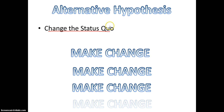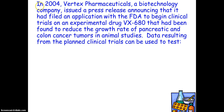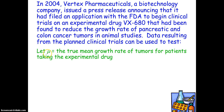Let's talk about what these mean in a problem. Here's a sample problem. In 2004, Vertex Pharmaceuticals, a biotechnology company, issued a press release announcing that it had filed an application with the FDA to begin clinical trials on an experimental drug VX680 that had been found to reduce the growth rate of pancreatic and colon cancer tumors in animal studies. Data resulting from the clinical trials can be used to test the following hypothesis, which we'll write. So mu means the mean or average — they're going to test the hypothesis surrounding the true mean growth rate of tumors.